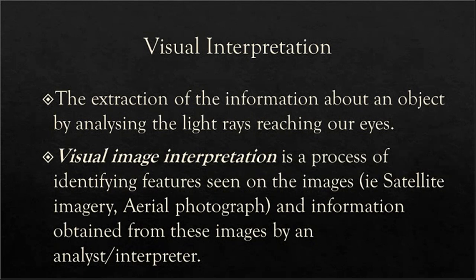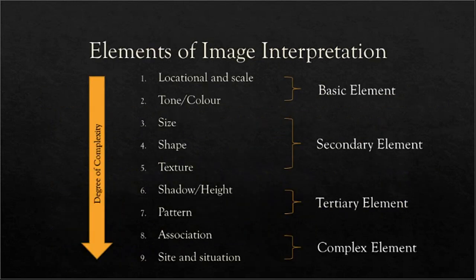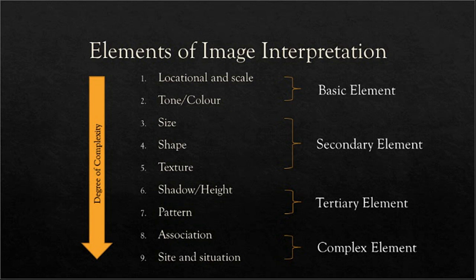Now, coming to the elements of visual image interpretation. There are nine total elements. As we move down, the degree of complexity increases. The initial ones are known as the basic elements, the middle ones are known as the secondary and tertiary elements, and the last ones are known as the complex elements.